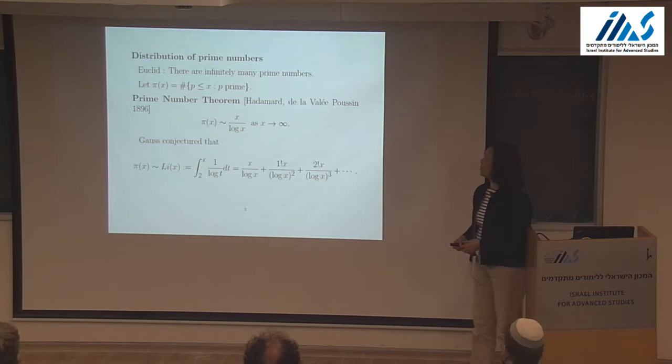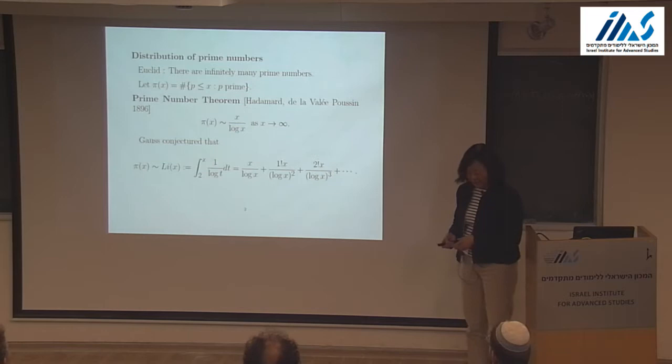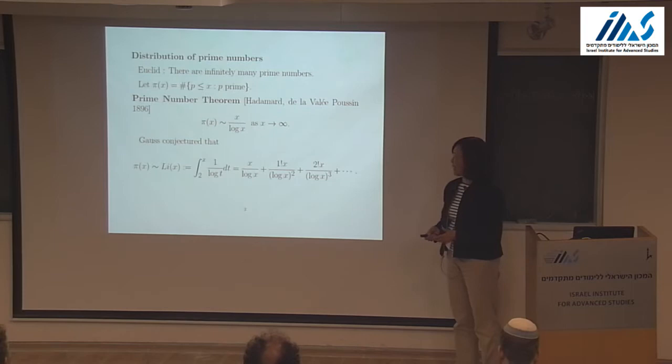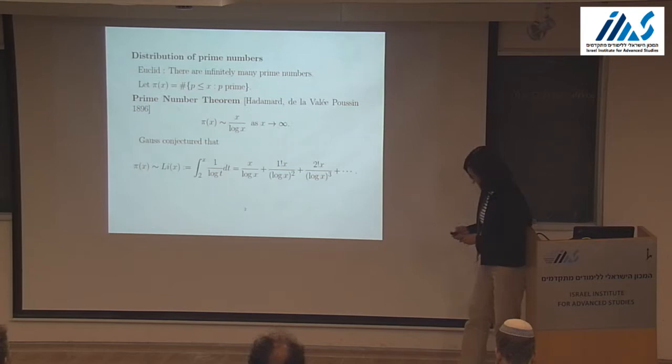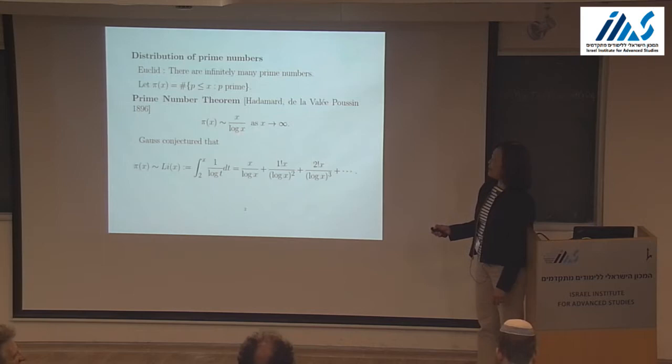Already in 300 BC, Euclid showed that there are infinitely many prime numbers. The question is how these prime numbers distribute. In 1896, Hadamard and de la Vallée Poussin proved the prime number theorem, which says that the number of primes up to X is about X over log X when X is very large.